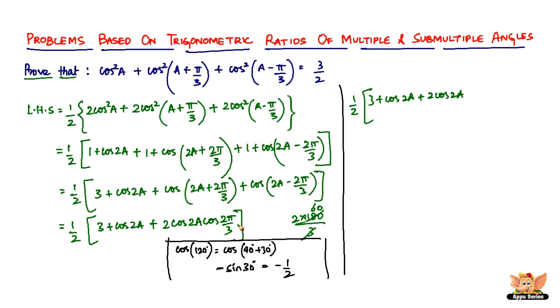So 2cos2a times cos(2π/3) which is -1/2: the 2 and 2 cancel. It becomes 1/2[3 + cos2a - cos2a]. Cos2a and negative cos2a cancel, leaving 1/2 × 3 = 3/2, which equals RHS. This is how we prove it.